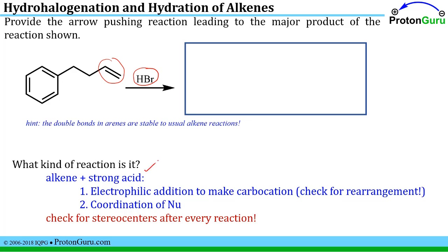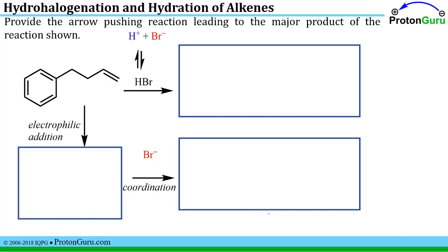Whenever you see that combination — alkene plus strong acid — you should think about a two-step process: electrophilic addition followed by coordination of a nucleophile. The electrophilic addition leads to formation of a carbocation. You've got to check whether that carbocation will rearrange. And with all reactions, check the stereochemistry for any chiral centers. A strong acid dissociates into a proton, which is a great electrophile, and a bromide, which is a good nucleophile — lucky, because we need one for the coordination step.